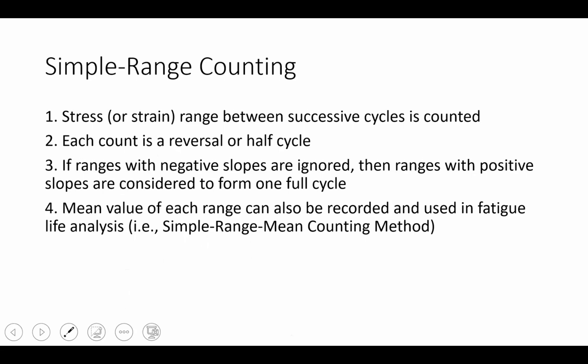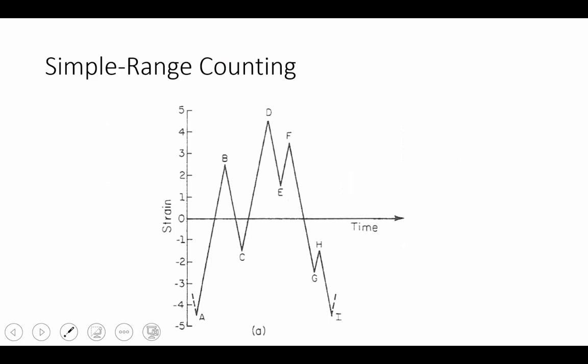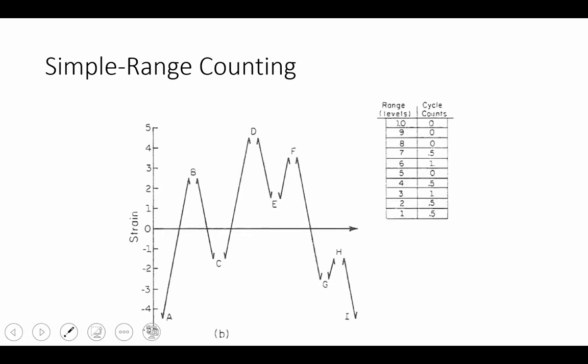The third simple approach is simple range counting. This is where we focus purely on what are the ranges that we have to create half cycles. And then we take those half cycles and form a complete cycle. It looks very similar to the previous peak counting where we just have these peaks. But what we're doing instead is we're just taking the portion we ran under and then trying to form cycles from those portions.